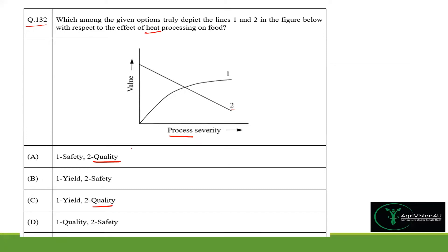Coming to line 1, it goes on increasing — starting from zero it increases as process severity increases. The options can be safety or yield. We cannot determine yield by process severity alone since yield depends on many other parameters. However, safety will surely increase when process severity increases, hence line 1 represents safety. Option A is correct.